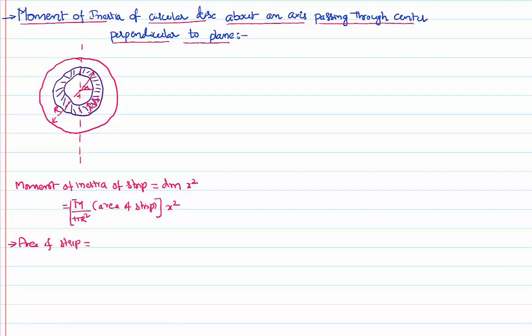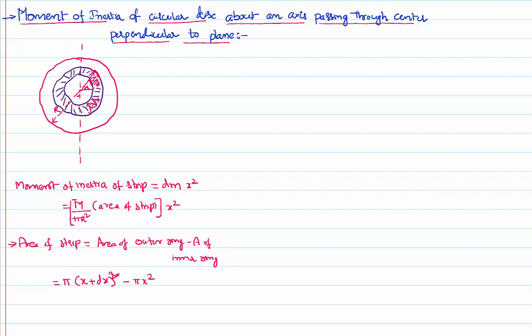Area of the strip is area of the outer ring minus area of the inner ring. The outer ring is pi times (x plus dx) whole squared, using the formula pi r squared. Expanding: pi times (x squared plus 2x·dx plus dx squared), minus pi x squared. Taking pi common: x squared plus 2x·dx plus dx squared, minus x squared.